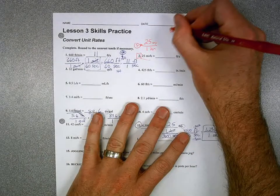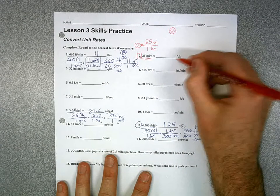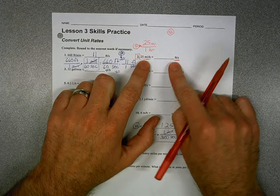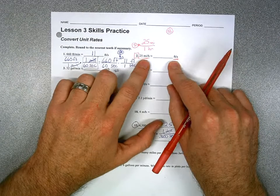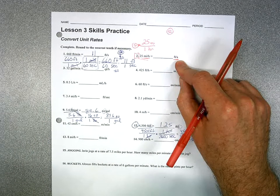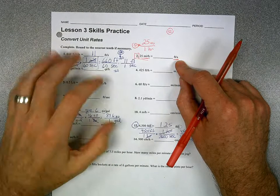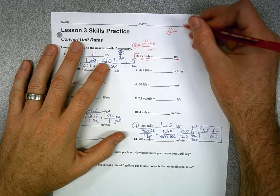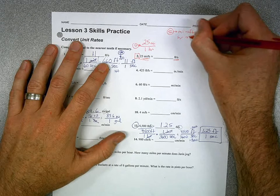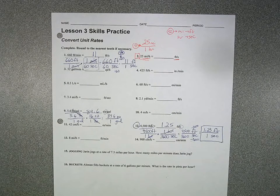Now remember, step two: ask yourself, what's the difference between that unit rate and the target unit rate? Miles to feet, and hours to seconds — that's what it means by double conversion. We have two things changing now, so you do have to track those. It may even help to write them down — miles to feet and hours to seconds — so you won't lose track of the unit ratios you need to find in the back of your book.